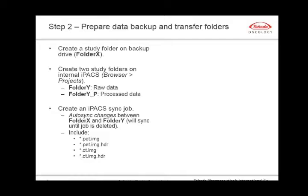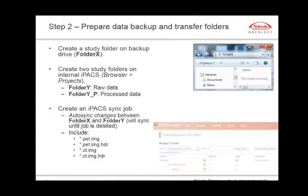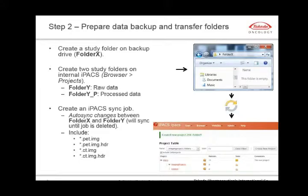The next step — preparing data backup and transfer folders — we do before each study. First, on our local server we create a backup folder, folder X. Then in IPACS we create two folders: folder Y that will contain the raw data mirroring the structure of folder X, and folder Y underscore P for preprocessed data, where ROI data and generated reports will also reside. Finally, we use IPACSync to create a background job that automatically transfers data from folder X to folder Y on IPACS. We specify that we're interested in PET and CT images along with associated header files, but we have the flexibility to add list mode data if needed.